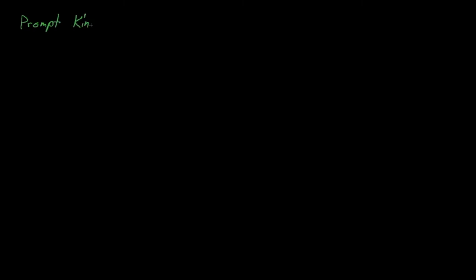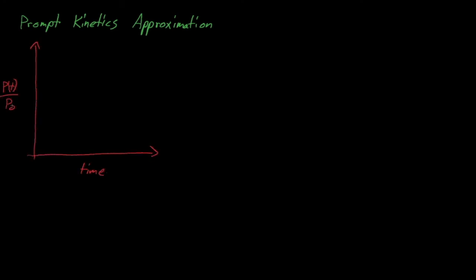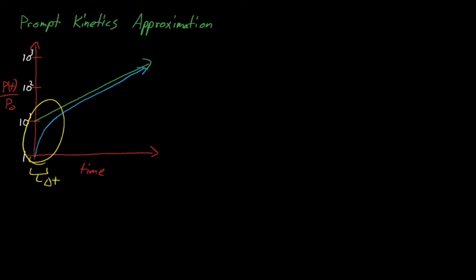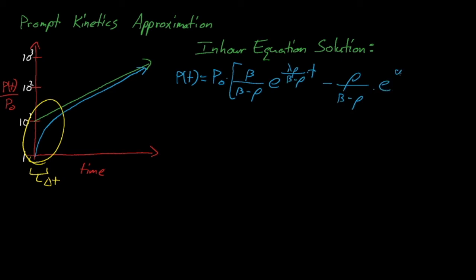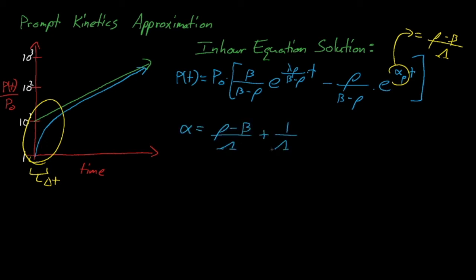Lastly, we will discuss the prompt kinetics approximation, which is in many ways the exact opposite of the prompt jump approximation. The prompt kinetics approximation is unique compared to the rest of the material discussed so far in this course, as it applies to prompt supercritical transients. During a prompt supercritical transient, there is an initial jump in the power, but the power quickly assumes a very rapidly increasing asymptotic shape. If we look at our in-hour equation, we see that our prompt term is now positive with a positive exponent, while our delayed term is now negative with a negative exponent. So now our delayed term is responsible for that non-asymptotic behavior at the very beginning of our prompt supercritical transient.